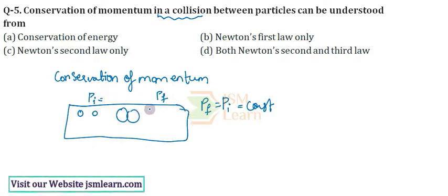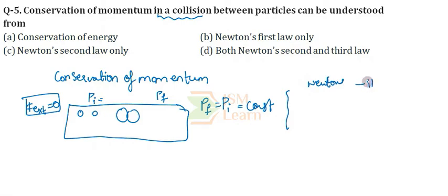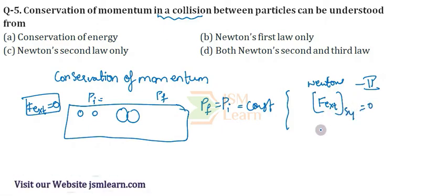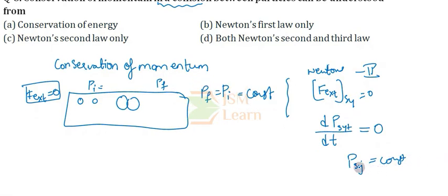Also, if there is no external force acting on the system — that is, external force is zero — then the momentum will be conserved. To understand where we concluded this, we look at Newton's second law. Newton's second law says that if the external force acting on the system is zero, then the rate of change of momentum of the system with respect to time will also be equal to zero.